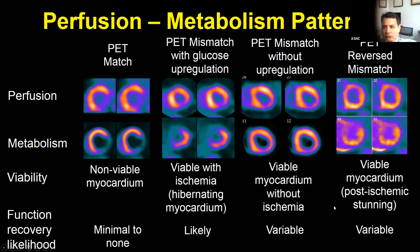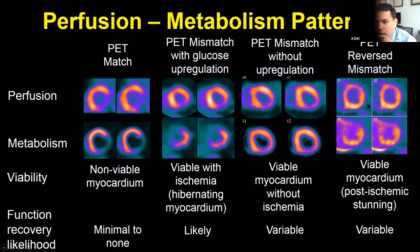A reverse mismatch — relatively preserved perfusion but reduced metabolic uptake — is sometimes seen after acute MI when myocardium is stunned post-reperfusion. The myocardium is viable because perfusion is okay, but has reduced metabolic activity for days or weeks. Re-imaging after several weeks should show FDG activity. This pattern is also seen in patients with left bundle branch block, and interestingly, after CRT implantation, FDG activity seems to improve as dyssynchrony resolves.